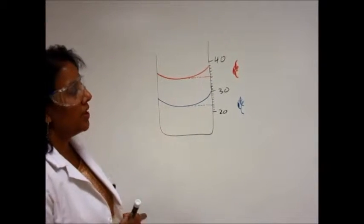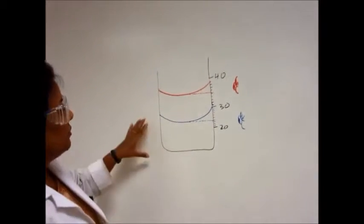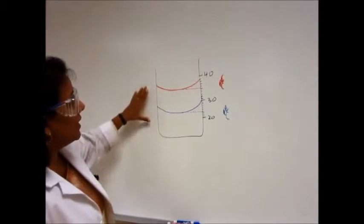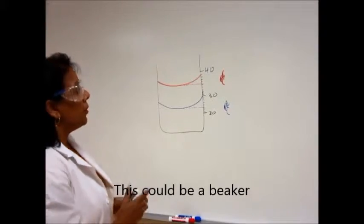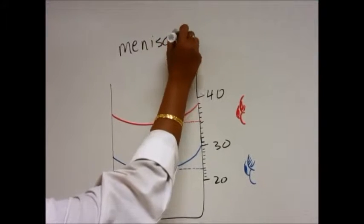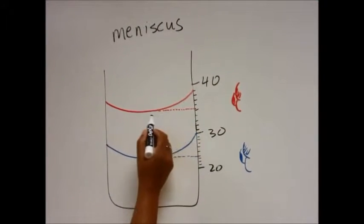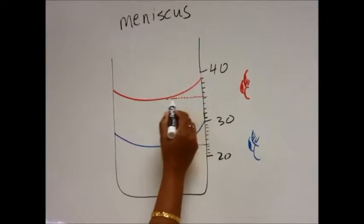I'm going to teach you how to read a volume measuring device because it's very specific. When you pour water in any measuring device, whether it's a graduated cylinder, beaker, or Erlenmeyer flask, you're going to get a curve like this, and this curve is known as a meniscus. You read the bottom of the curve, not the top of it.